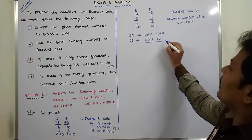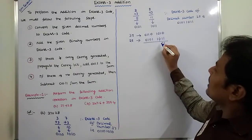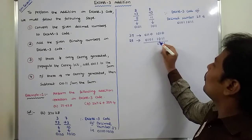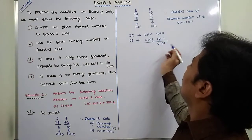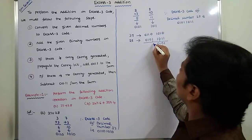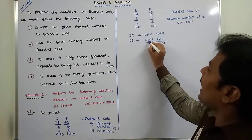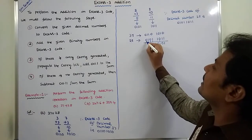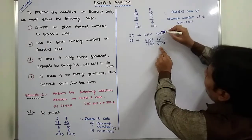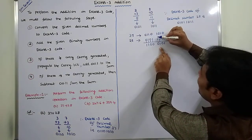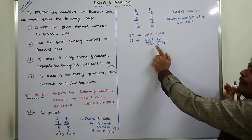Performing binary addition: 0 plus 1 is 1; 1 plus 1 is 0 with carry 1; 1 plus 1 is 0 with carry 1; that carry 1 is propagated to the next higher 4-bit group. For the next group: 0 plus 1 plus 1 is 0 with carry 1; 1 plus 1 plus 1 is 1 with carry 1; 0 plus 0 plus 1 is 1. A carry is generated: 1 plus 1 is 0 with carry 1, and this carry is propagated to the next higher 4-bit group.